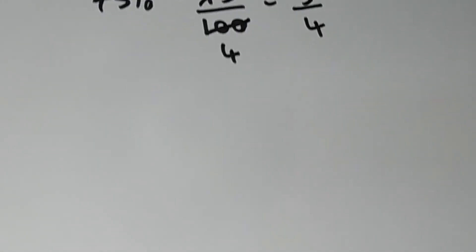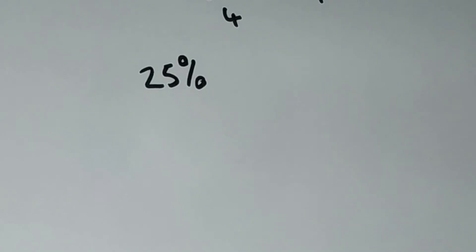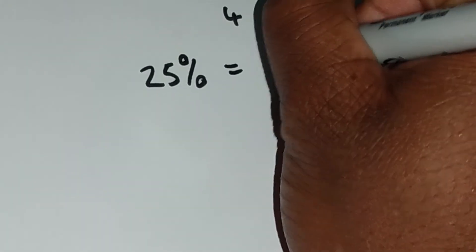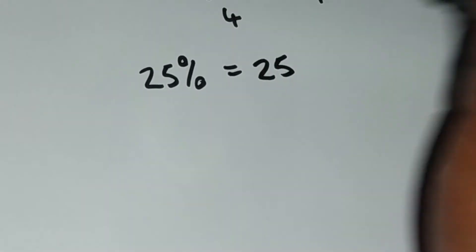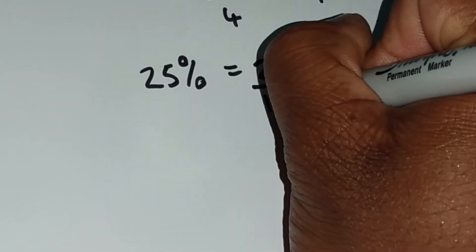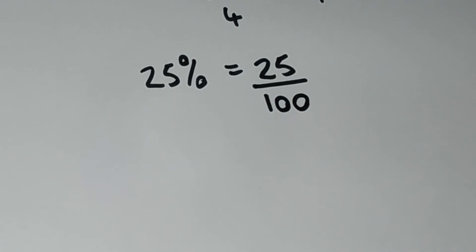Now let us look at the final example. What if we had 25% and we wanted to represent this 25 as a fraction. Again, it's very easy. We just put this 25 here over 100. And if possible, we can always reduce it.